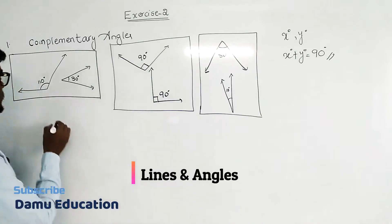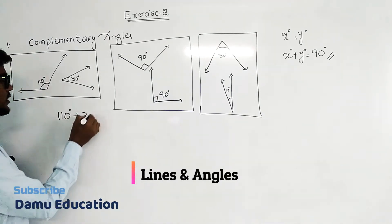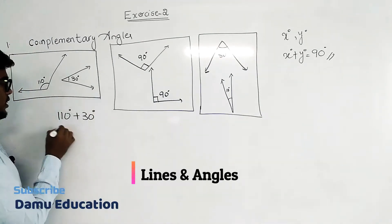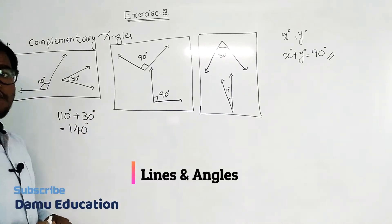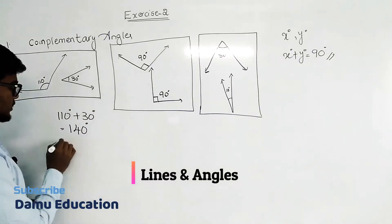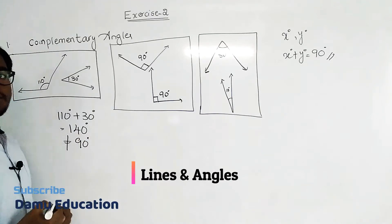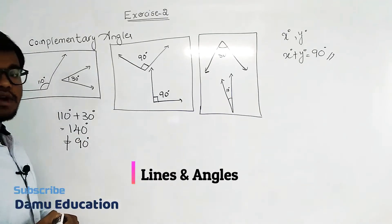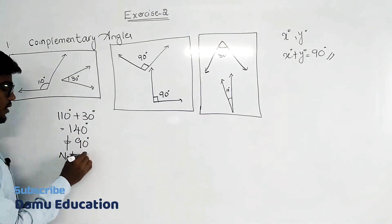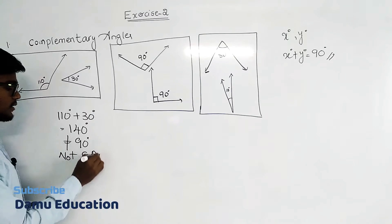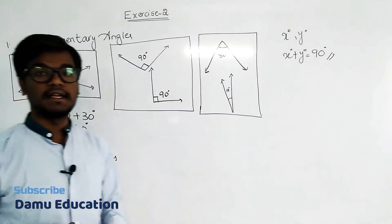Let's add 110 plus 30 degrees — you will get 140 degrees. This 140 degrees is not equal to 90 degrees, so the given two angles are not complementary angles.